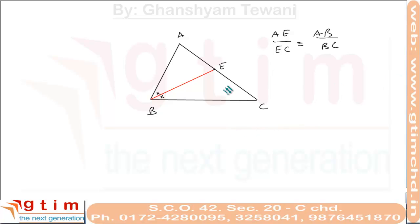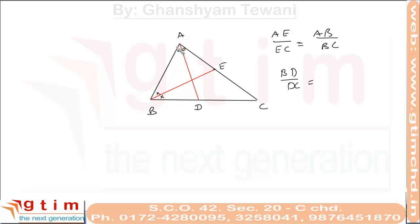For example, if we draw the angle bisector for angle A, this bisector divides the opposite side BC in the ratio BD upon DC, which equals the ratio of adjacent sides AB upon AC. Let's prove this fact.